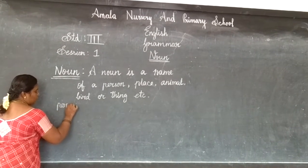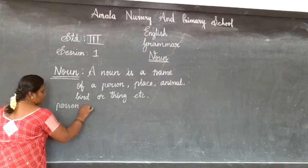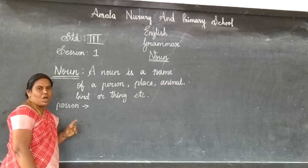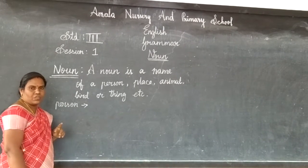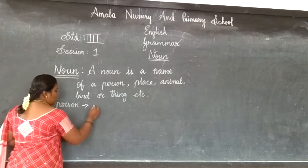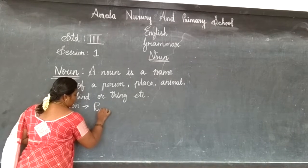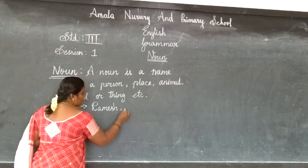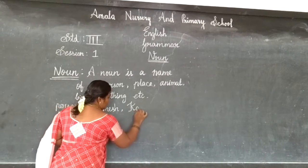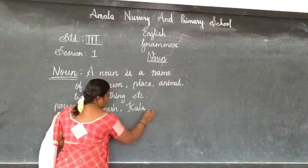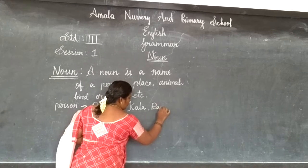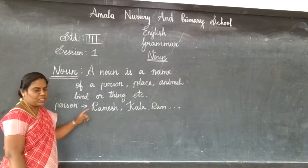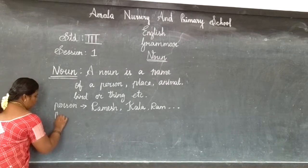First one: person. You must start with a capital letter. When you write your name or your father's name, you must start with a capital letter. Here I will write Ramesh, Kala, Ram etc. So I started with a capital letter.